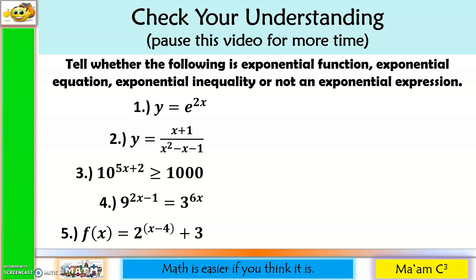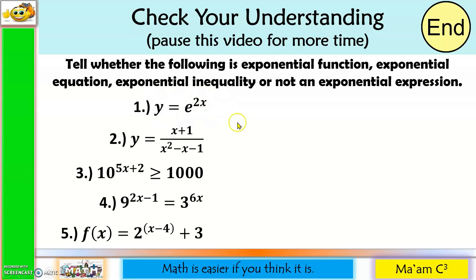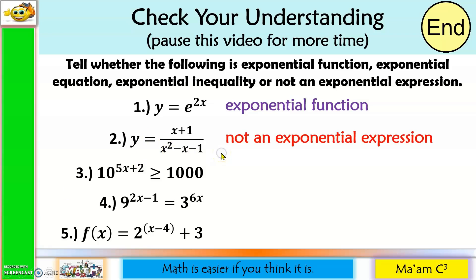Now let us check your understanding. Pause this video for more time. Here are the answers. For number one: I have here y and equal sign. Remember, e is a constant raised to an exponent that contains a variable. Therefore, this is an exponential function because of y. For number two: I have y and equal sign, but on this side I do not have an exponent that contains a variable — the 2 here is a constant. Therefore, this is not an exponential expression. For number three: I have a constant raised to an exponent with a variable and an inequality symbol. Therefore, this is an exponential inequality.